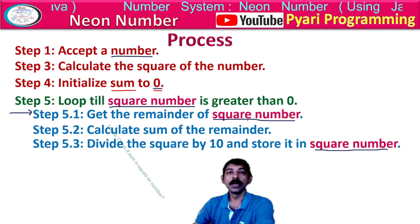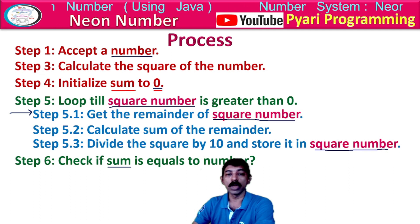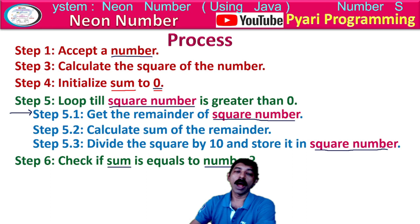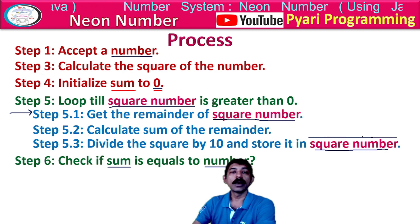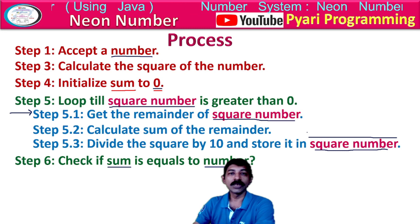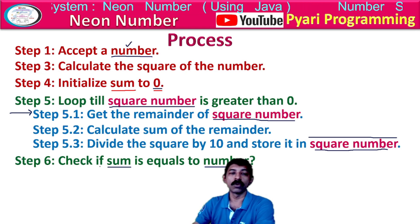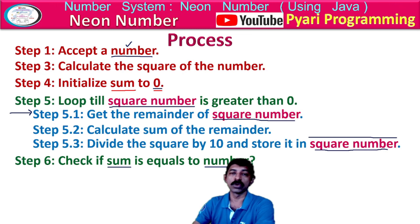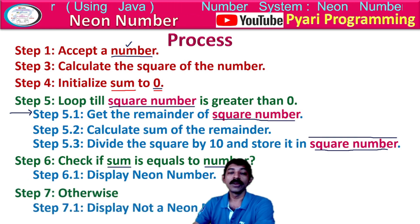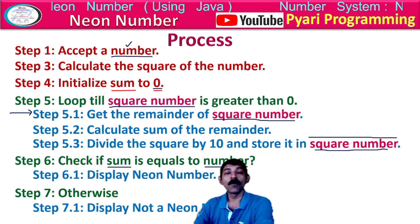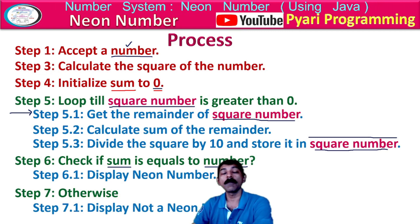After that we come out of the loop. After coming out of the loop, we check: if the sum equals the number. Here another mistake can happen — you might check sum equals square number, but when you come out of the loop, square number is 0; it is not the original number. So you must write: sum equals 'no' (the number entered by the user). If equal, it is a neon number; otherwise it is not a neon number. This process must be remembered for the exam.